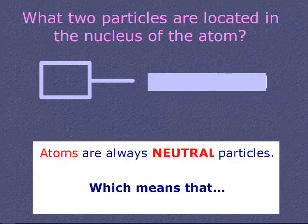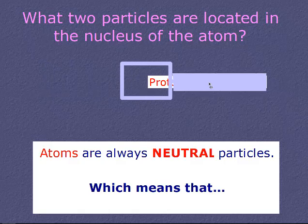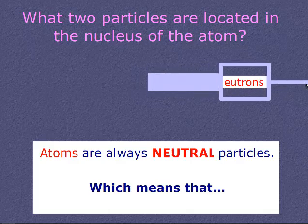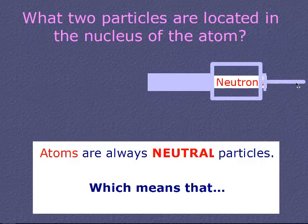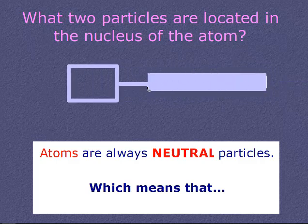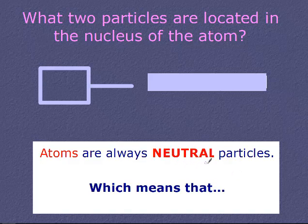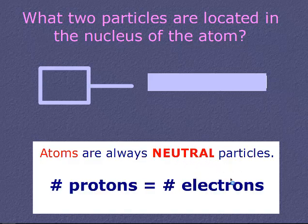What two particles are located inside the nucleus of an atom? The answer is protons and neutrons. Atoms are always neutral particles, which means the number of protons and electrons have to equal each other in order for the atom to stay neutral.